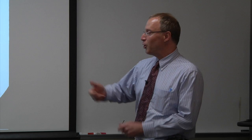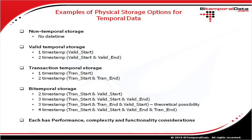It gets a little more complicated when we get to bi-temporal storage. Now there are four different types of approaches for physical storage of this type of data. One is to just have two timestamps: a transaction start and a valid start. Another permutation is to have a transaction start, a valid start, and a valid end — so you have the time period for the valid data but just a single timestamp for the transaction dimension.